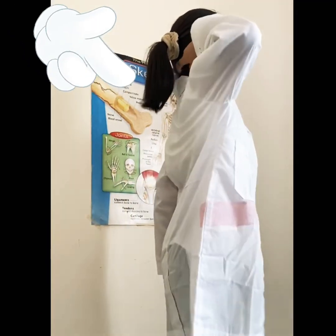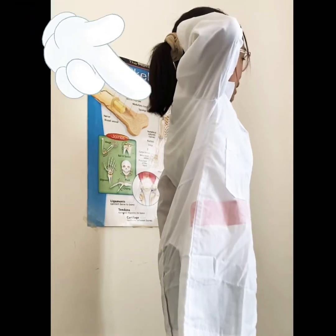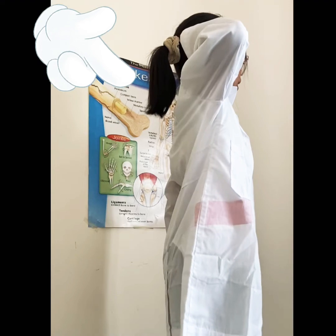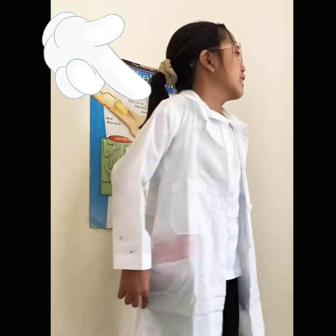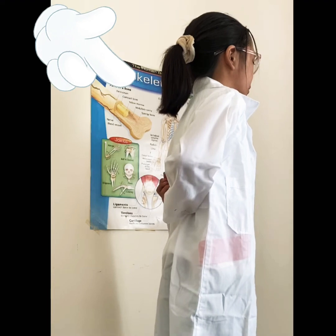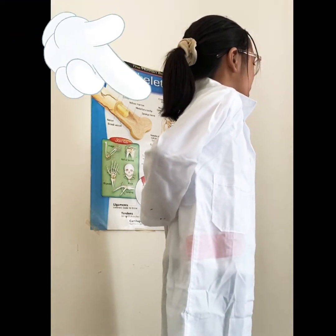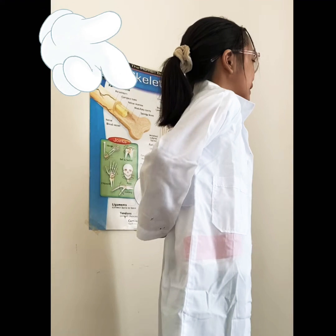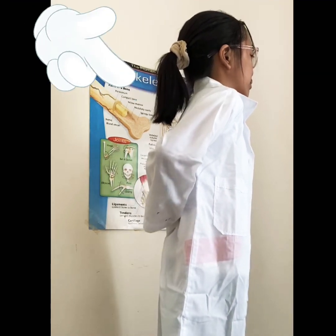And on top of the spine is called the cervical vertebra. Next is called the second cervical vertebra, and after the second cervical vertebra is called the first thoracic vertebra. And here is called the 12th thoracic vertebra. And here is called the first lumbar vertebra, and at the very last is called the fifth lumbar vertebra.